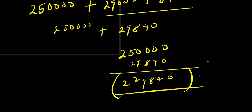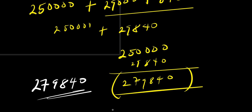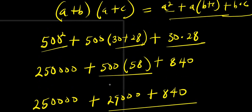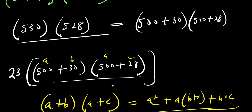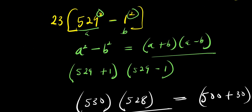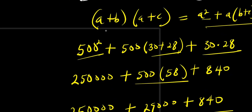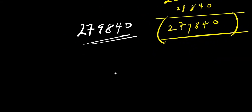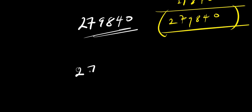So what we are going to do will be to copy out this result and multiply it by 23 to have our final answer. So this is 279,840, and we still have our 23 that we are going to use to multiply everything. So we have 279,840 times 23.